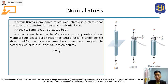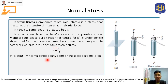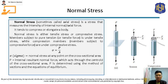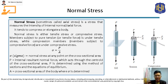Normal stress is denoted by the symbol sigma and can be computed by the formula P over A. Sigma is the normal stress at any point on the cross-sectional area. P is the internal resultant normal force which acts through the centroid of the cross-sectional area, and can be determined using the method of sections and equations of equilibrium. A is the cross-sectional area of the body where the normal stress sigma is determined.